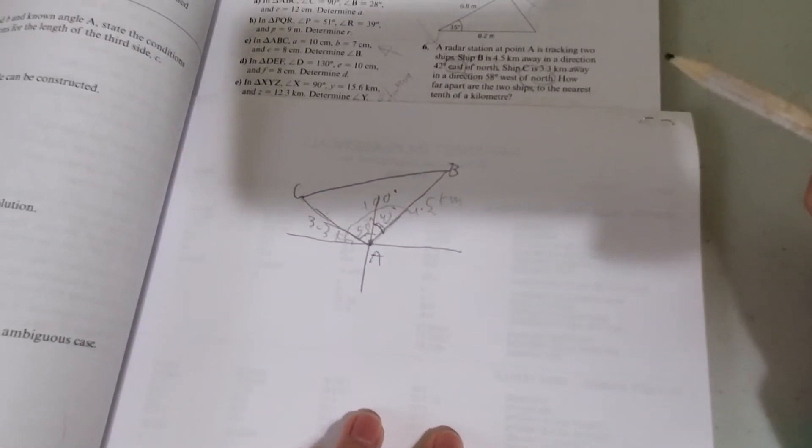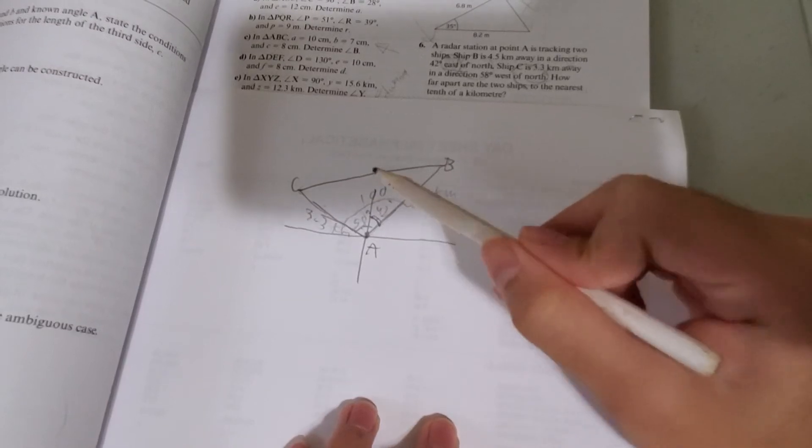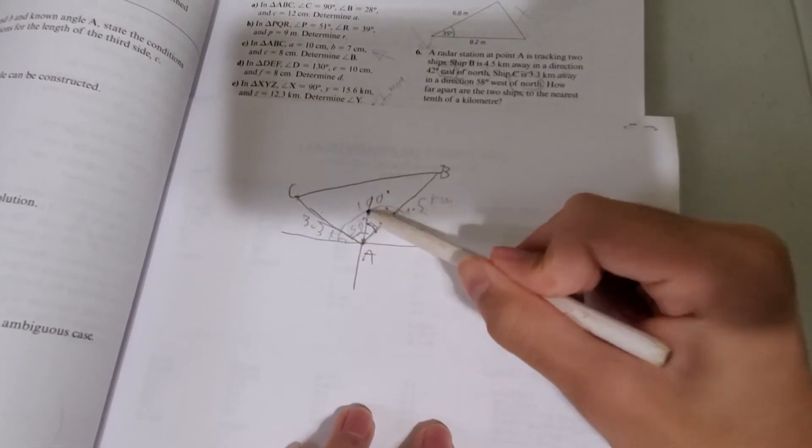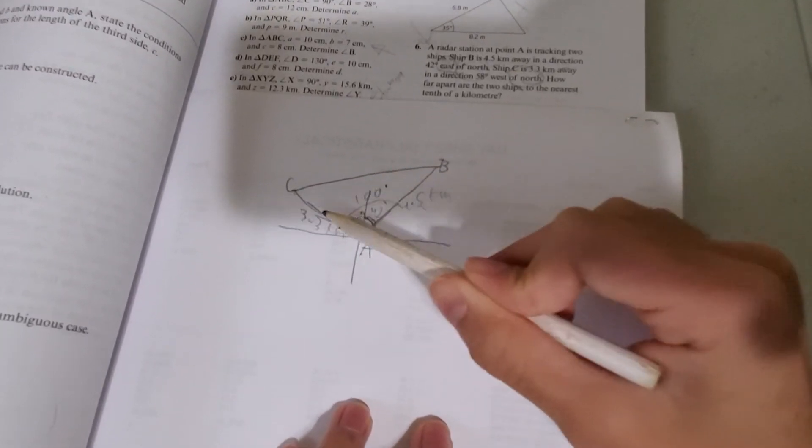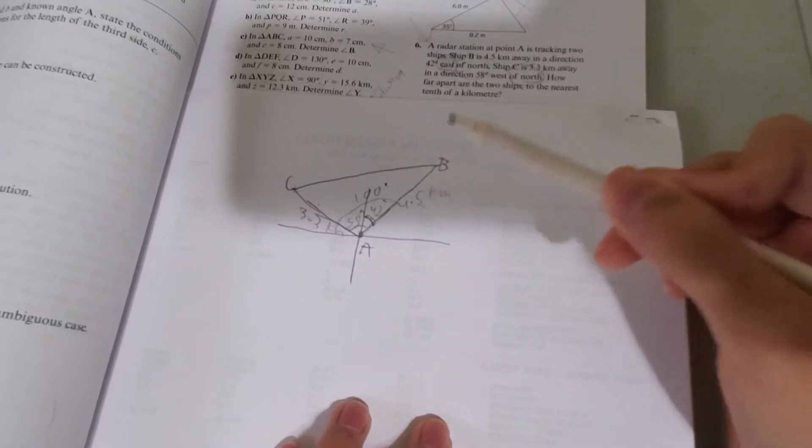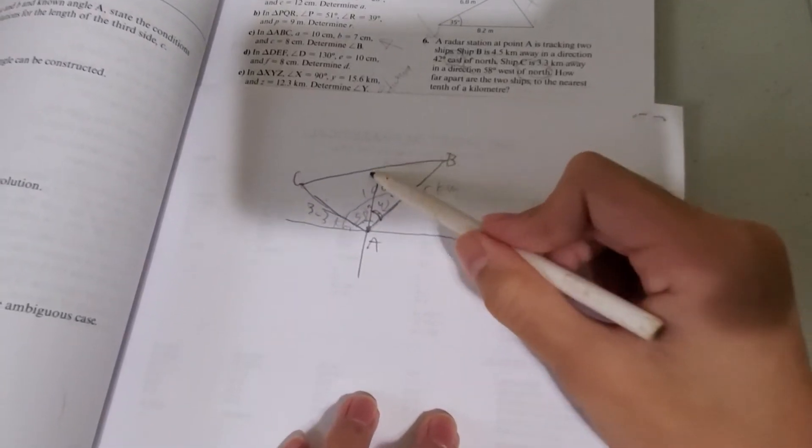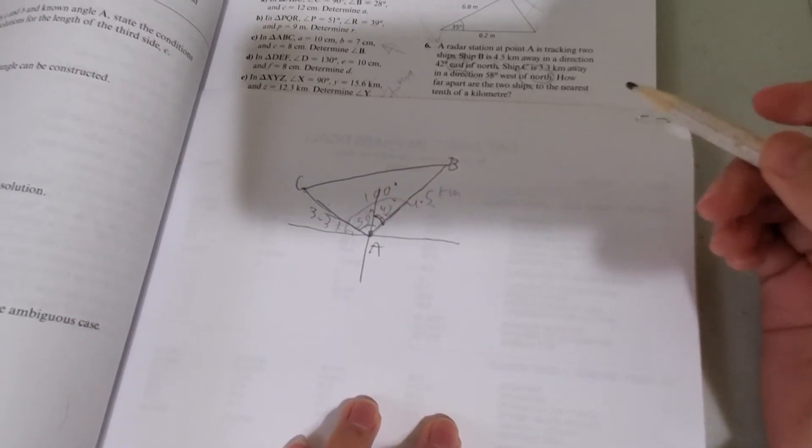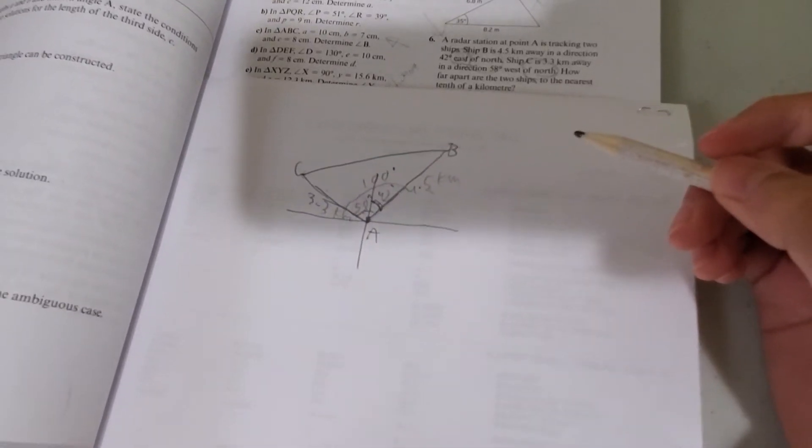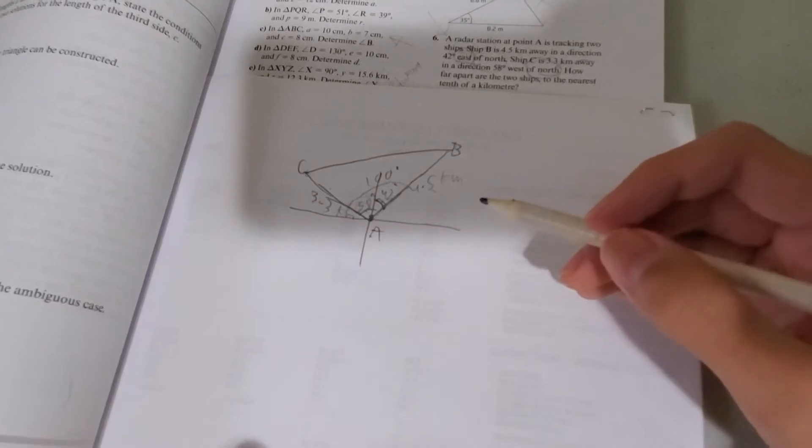And the cosine law states that you need an angle of a triangle and you need two adjacent side lengths to the angle to find out the opposite side length to the angle. So the law. So this is the formula for the cosine law.